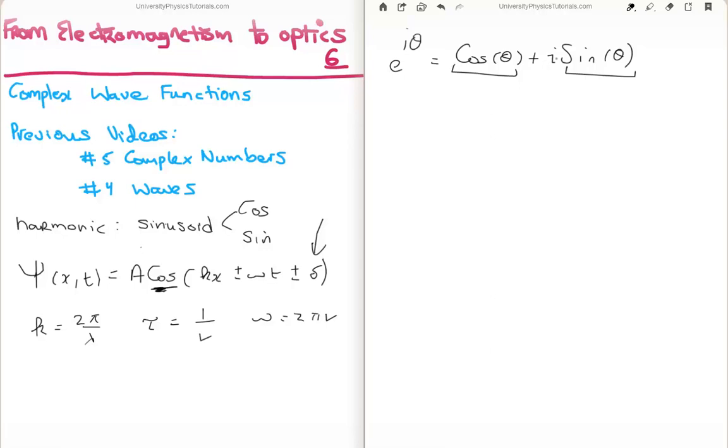What this suggests is that we can use this Euler's formula to describe a harmonic function if we accept that we take either the real part here or the imaginary part, because either the sine or the cosine can be used. For example, if I take the real part of e^(iθ), that will give us cos(θ).